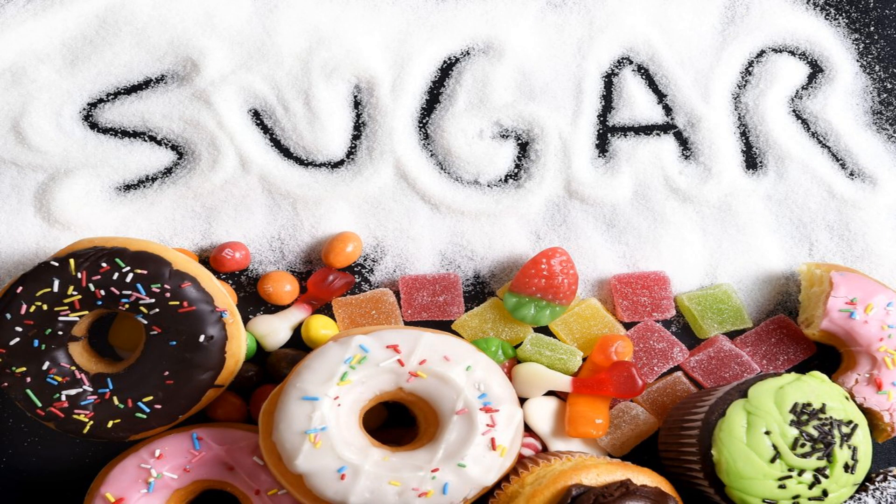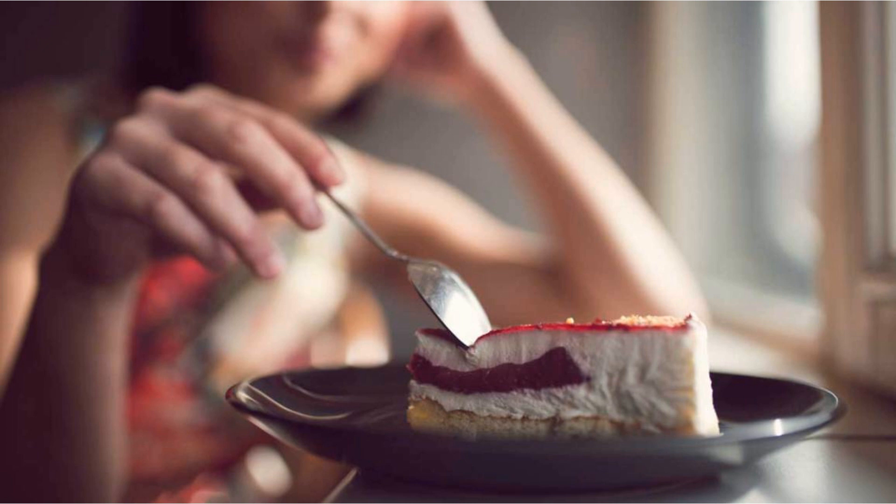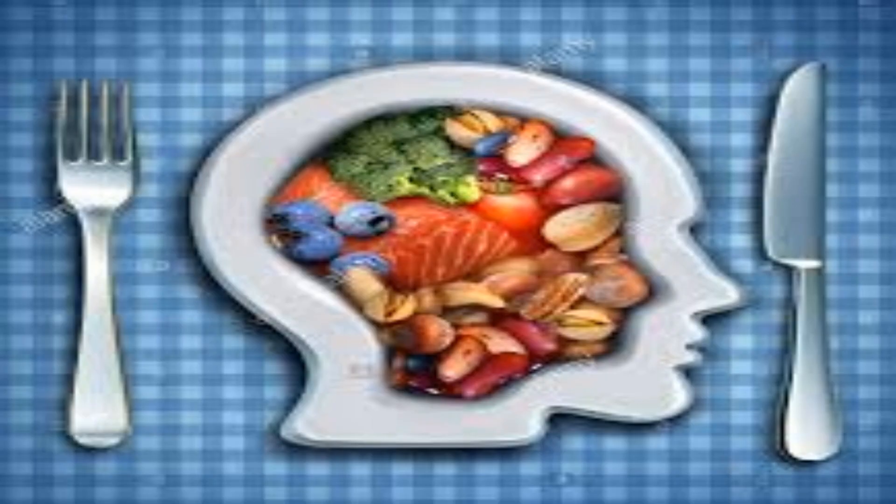Excess sugar is not good for the brain. It reduces the ability to learn, collect information, remember information, and concentrate. This is because excess sugar destroys neural connections, slowing down the brain. Instead, try to have healthy foods rich in omega-3 fatty acids, flavonoids, and antioxidants.